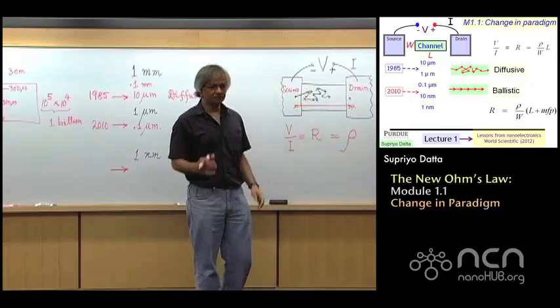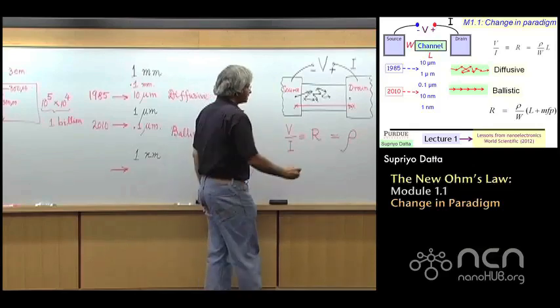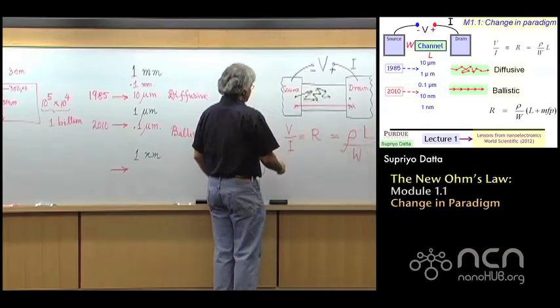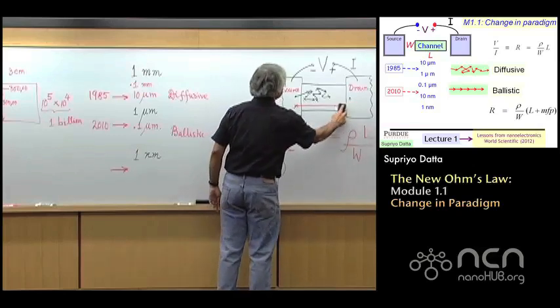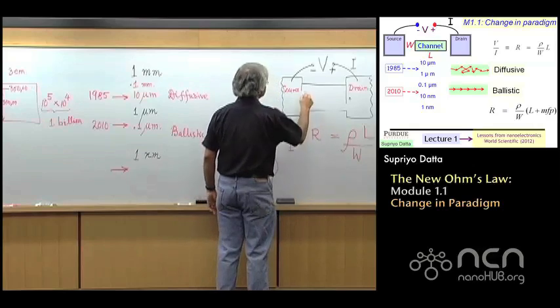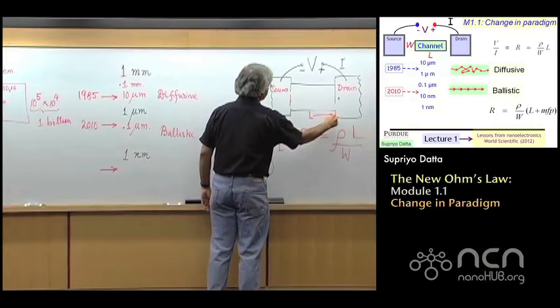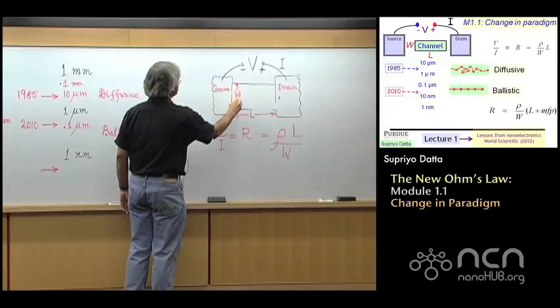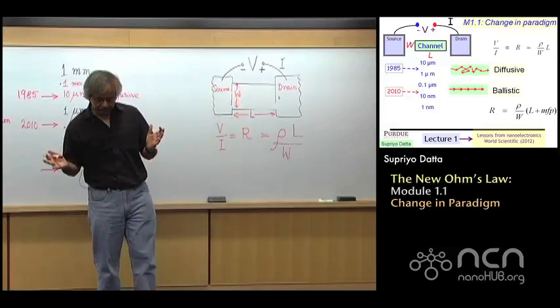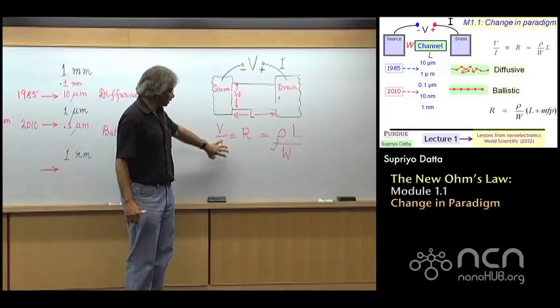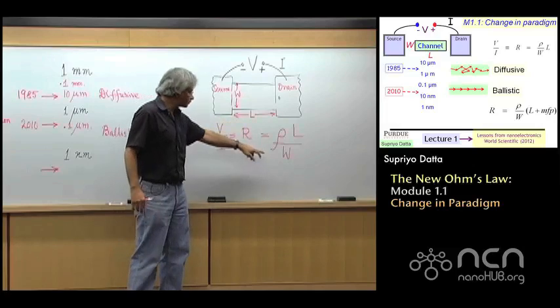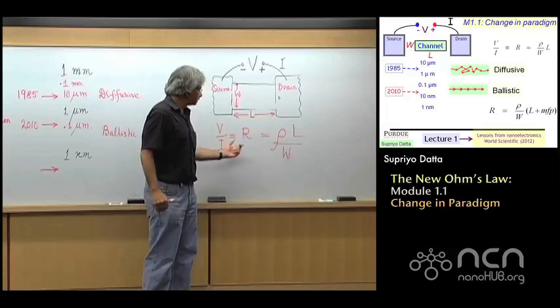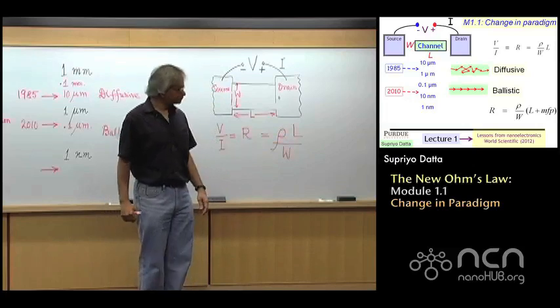Based on that, there was this general experimental observation that resistance can be written in the form of something called the resistivity, which is a property of the material of the channel, times the length of the channel, divided by the width. So, length is the distance from source to drain, and width is this, and the wider you make it, more current can flow, and when more current can flow, it means the resistance is smaller. So, that's why the width appears in the denominator. And, the longer you make it, the harder it is for electrons to get through. So, the length appears in the numerator.